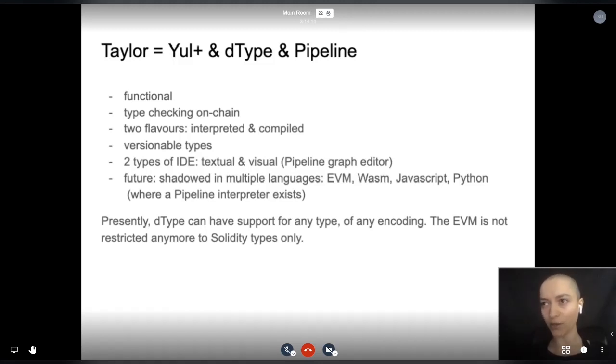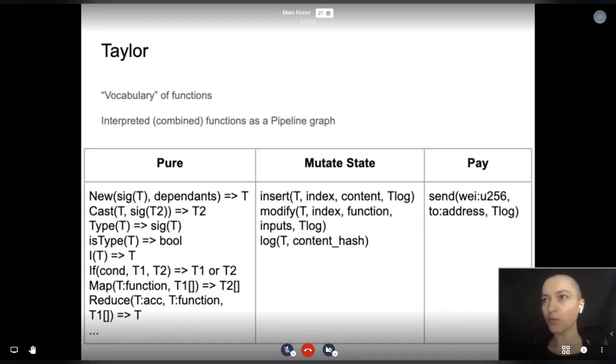What are the native Taylor functions? Type creation starts by using a suite of native functions that will be used recursively. Most of them are pure functions like new, identity, concat, map, reduce, curry. But state mutating functions for type values and the pay function are part of a Taylor extension where logic can be built upon the same principles of interpreting graphs.